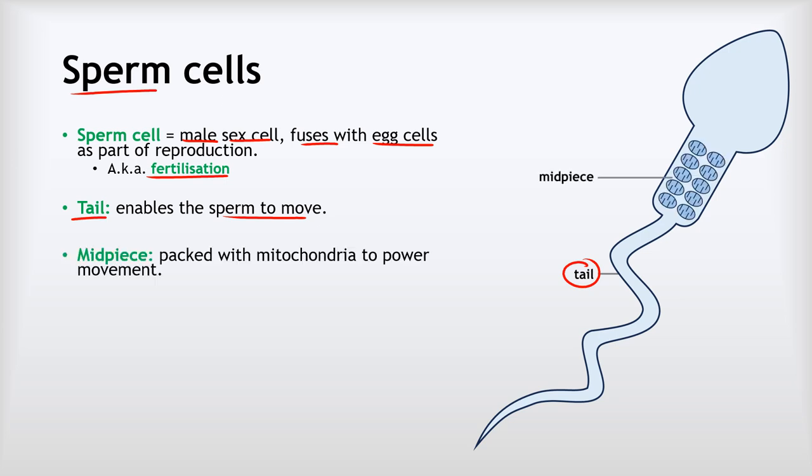The next part is called the mid piece — that's the middle section — and it's packed with lots and lots of mitochondria. That's to power the tail to enable it to swim.